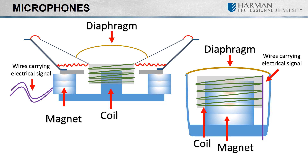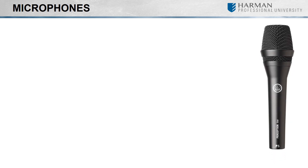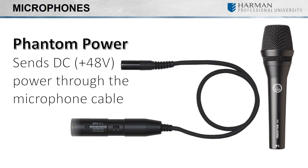The most common types of microphones you will find yourself working with in installed sound applications are dynamic and capacitor, or more commonly referred to as condenser. The names of these loosely describe how the microphone converts sound waves into electrical energy. Any one of these types of microphones can then be manufactured for a host of different applications, but we'll get more into that later. I won't bore you with a physics lesson on each type of microphone.